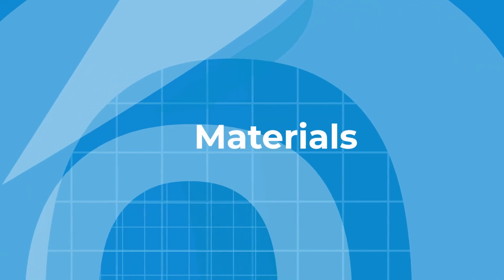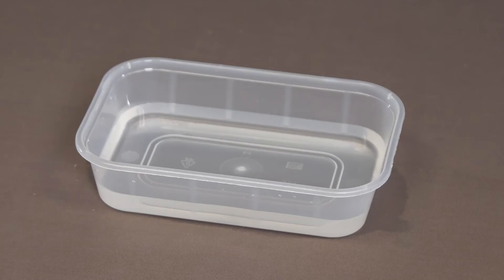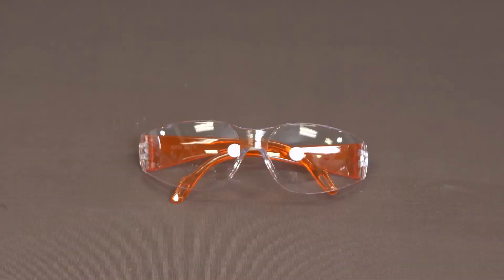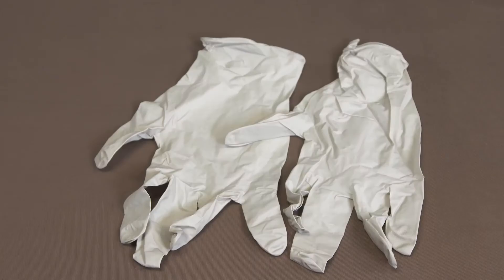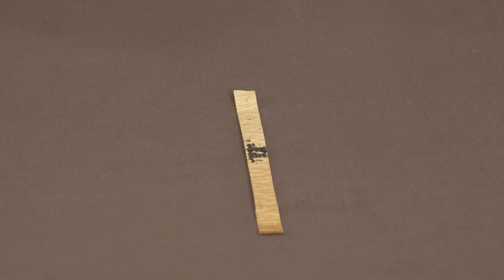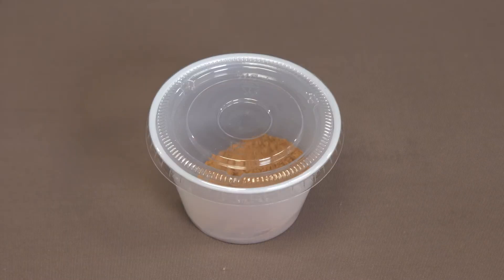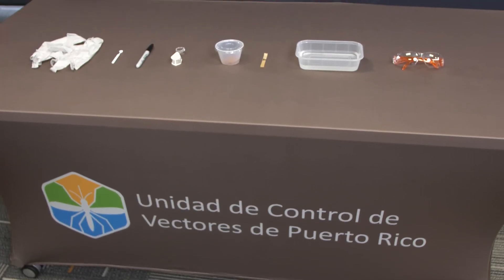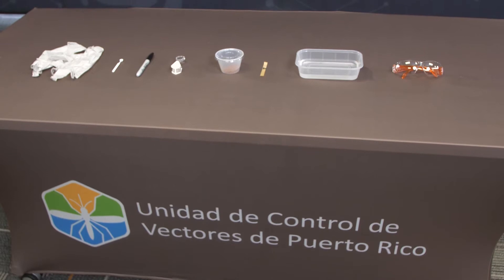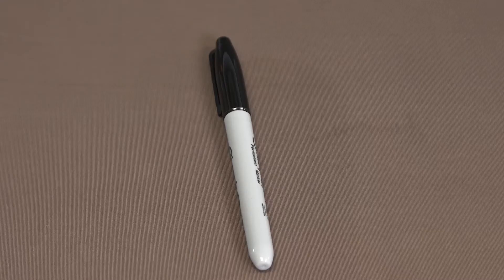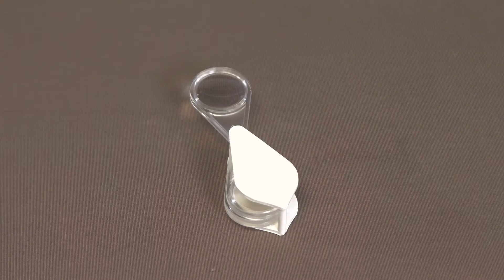Materials: larvae trays, glasses and gloves, germination paper with mosquito eggs, fish food, tap water, marker, and magnifying glass.